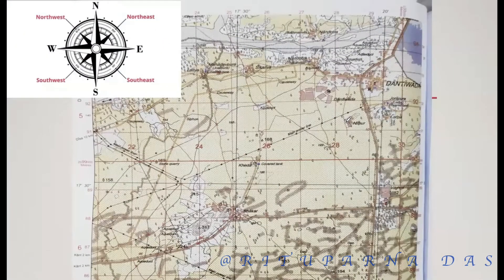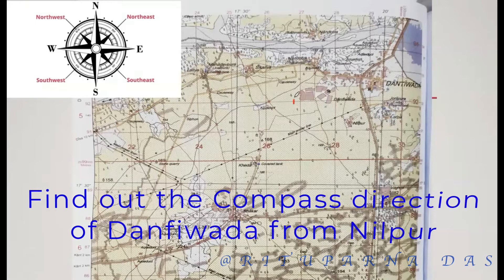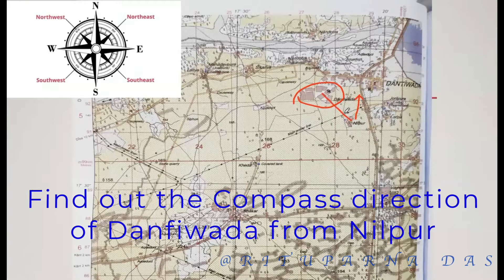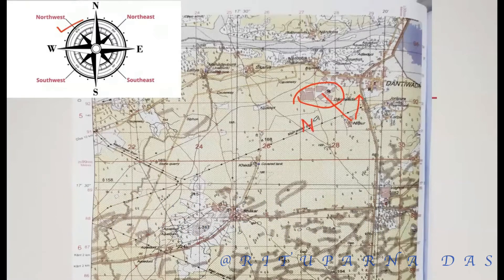For example, we have to find out the direction of Danfivara from Nilpur. So what we have to do is draw a north line here, then join these two places. Now we look at the quadrant, and we can easily see that Danfivara is situated in the northwest. So the village Danfivara is situated northwest of Nilpur — the answer is northwest.